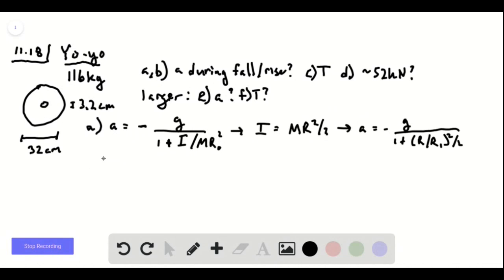So the acceleration is negative g over 51, or numerically evaluating this 0.19 meters per second squared.